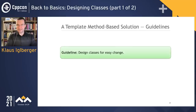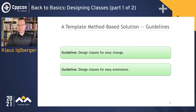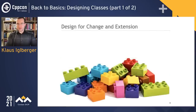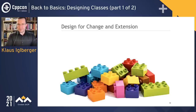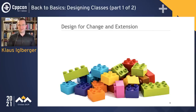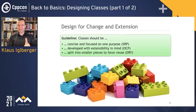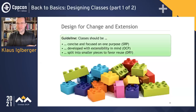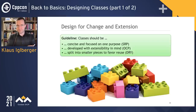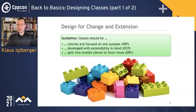Design classes for easy change and for easy extensions. Ultimately, this is what classes should look like — concise and focused on one purpose (SRP). Classes should always separate concerns; having several smaller classes is usually a better design. Classes should develop with extensibility in mind — there will be extensions, and it should be easy to add new things. Classes should be split into smaller pieces to favor reuse: smaller functions, smaller classes. All of these definitely help support the DRY principle.